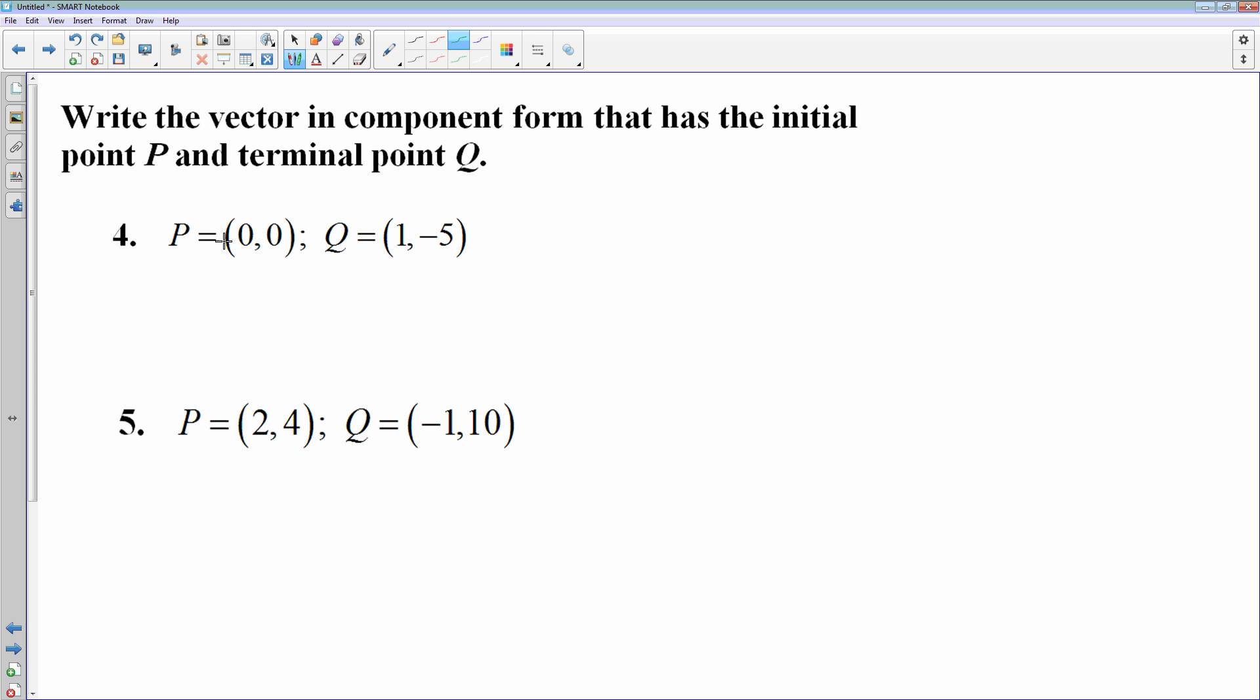Now, suppose I told you where the vector begins and where it ends. I'm giving you the terminal and initial points P and Q. And you have to convert it into component form. Well, the first one I made it really easy because I chose to start this vector at the origin. If I start at the origin and then I end up at 1 negative 5, then when I went on that journey, I went right 1.